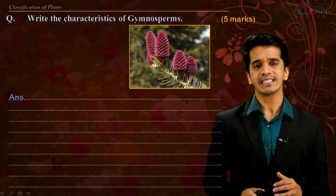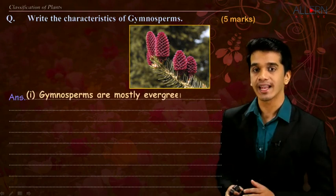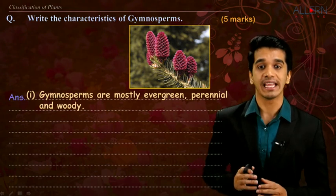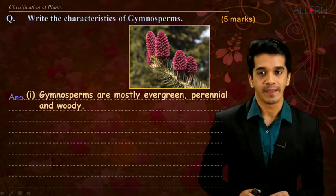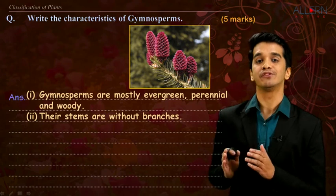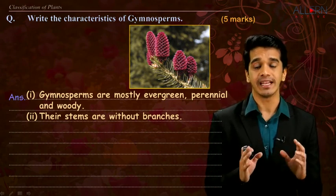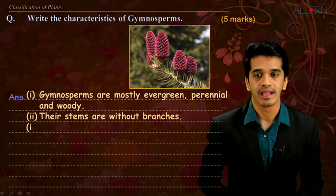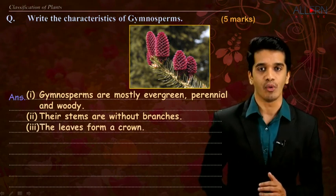Now let us see how to write this answer. The first point: gymnosperms are mostly evergreen, they are perennial, and they are woody. The second point: the stem is straight and without branching — it does not have any branching pattern. The third point: the leaf forms a crown.